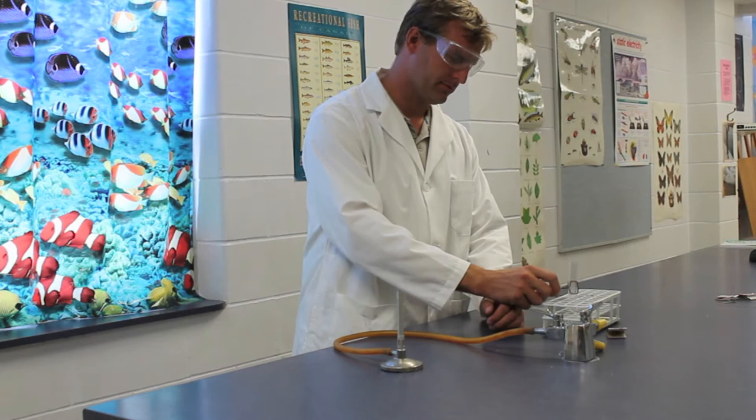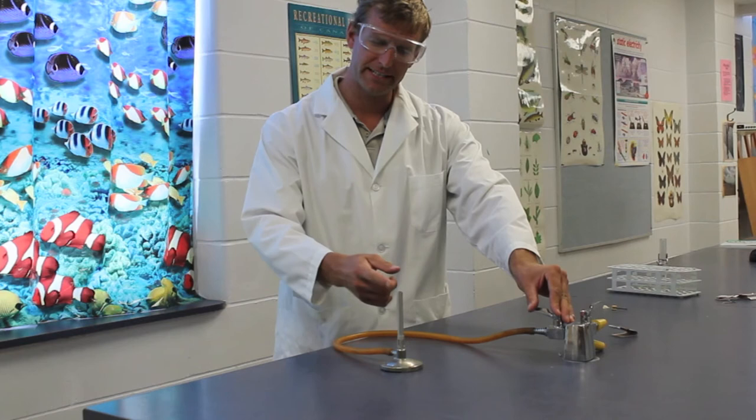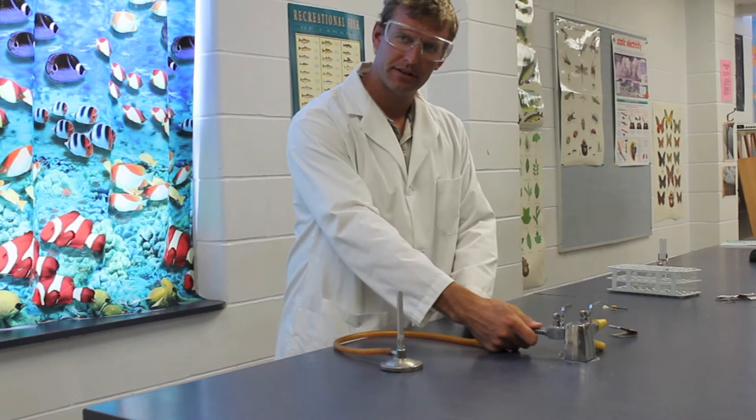And when we are done with our Bunsen burner, what we'll do is turn this valve off in a 90 degree fashion, thus turning the gas off from the Bunsen burner. We will disconnect the Bunsen burner from the gas tab and we will recover the gas tab.